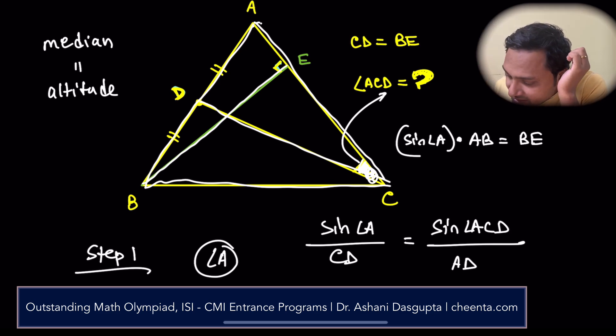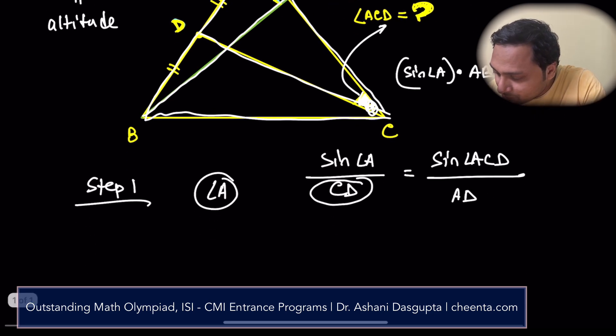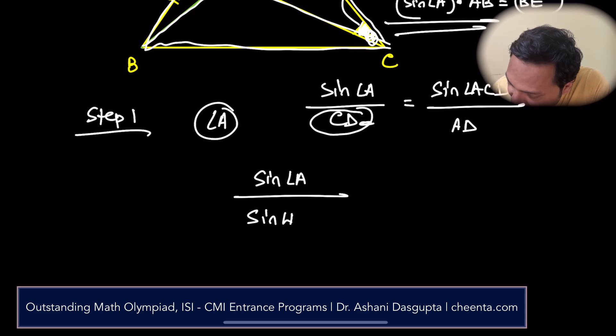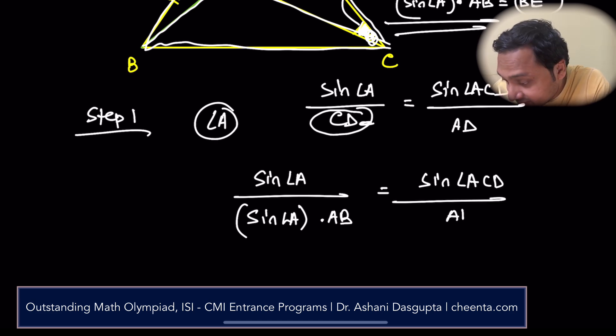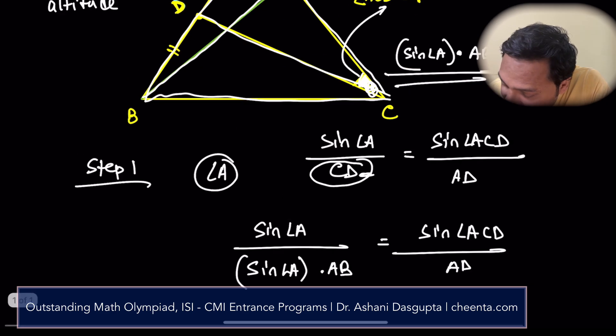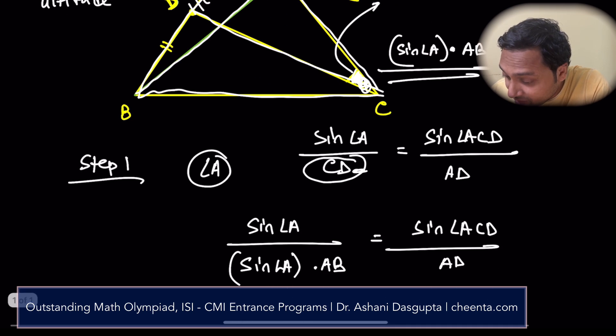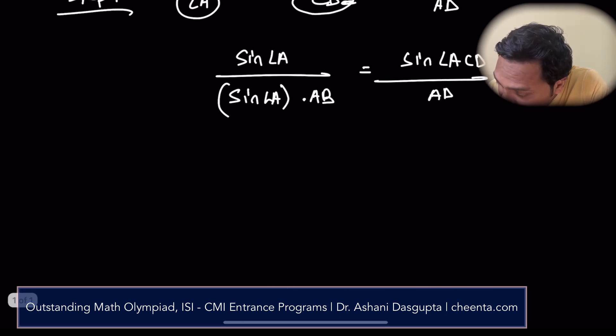CD is equal to BE, that is given. So, let's replace it. Sine of angle A divided by CD - we replace CD with sine of angle A times AB. And we have sine of angle ACD divided by AD. But AD is, after all, AB by 2. It's one half of AB. So, this is equal to AB by 2.